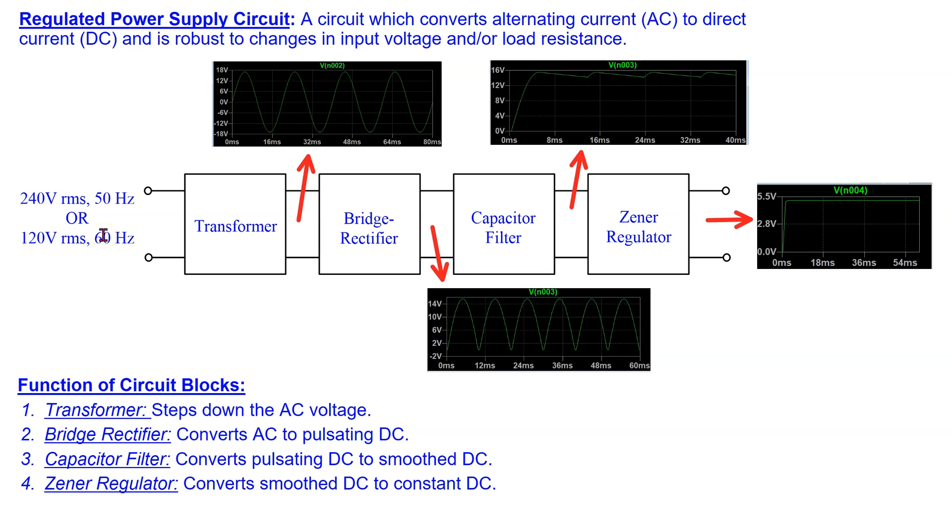The input to the regulated power supply circuit is a sinusoidal signal. Typically, the voltage and frequency are either 240V RMS at 50 Hz frequency or 120V RMS at 60 Hz frequency.